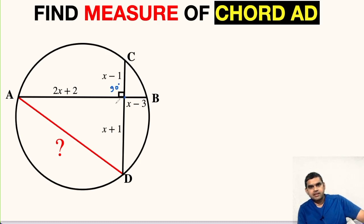Let us name it as point M. AM, MB, CM, and DM. These lengths are given in terms of variable X and we have to find the measure of chord AD.